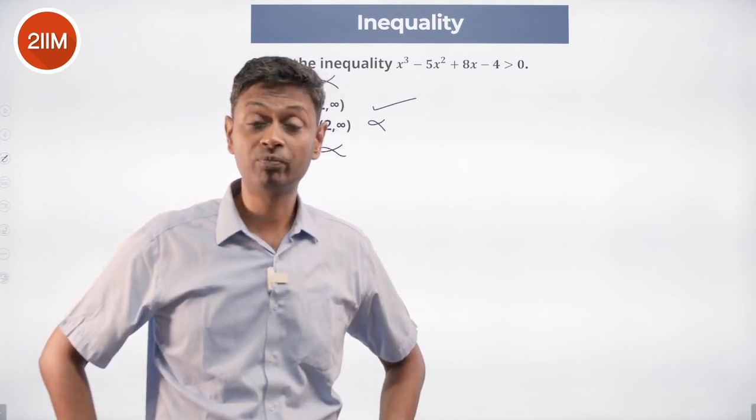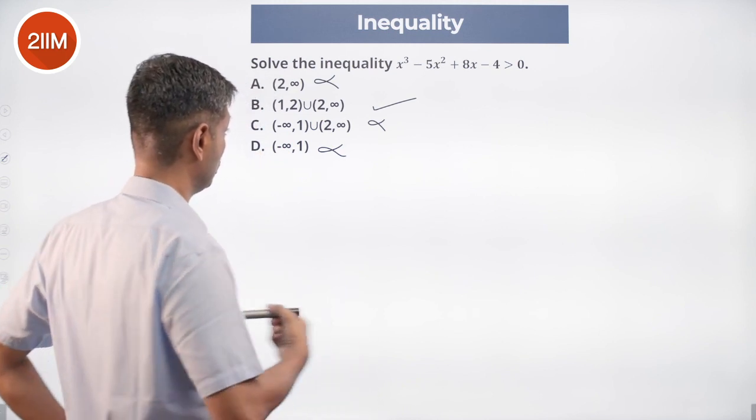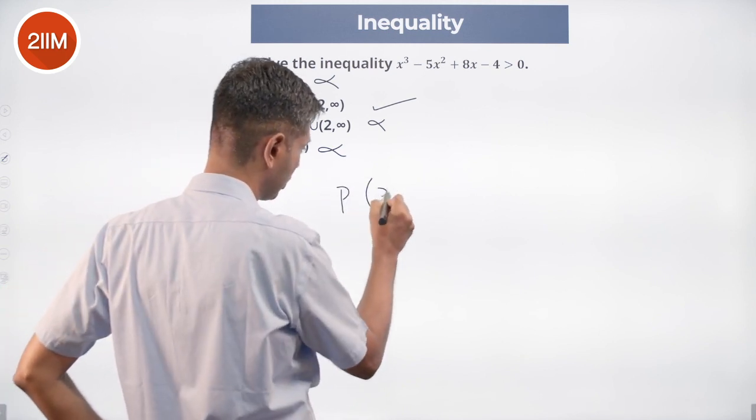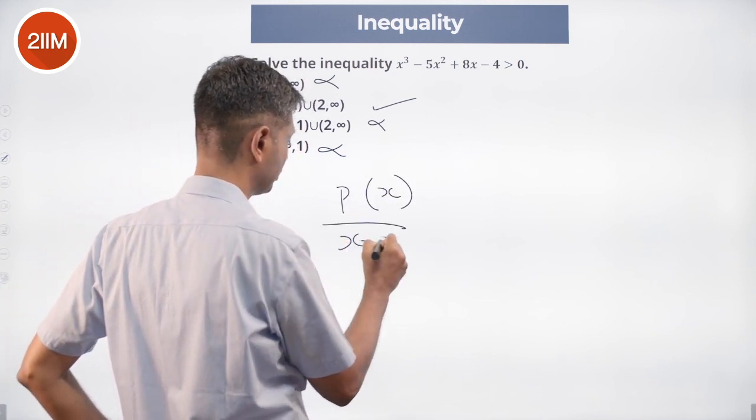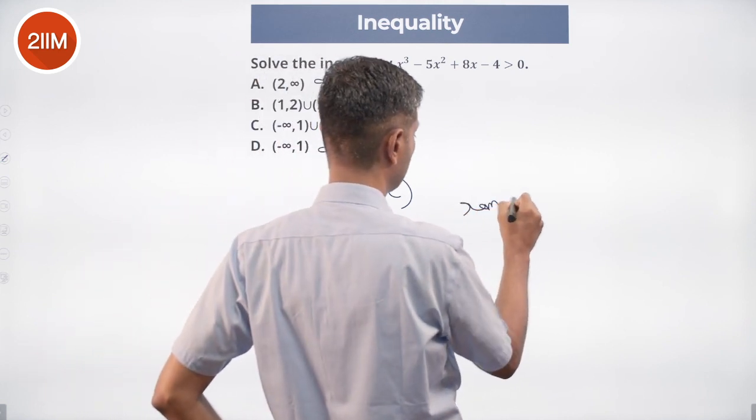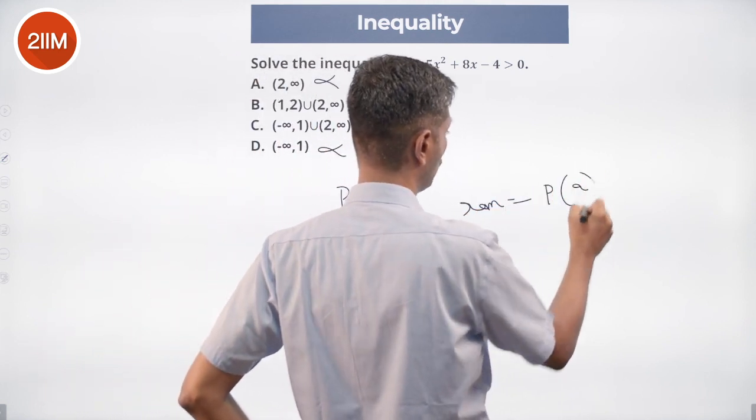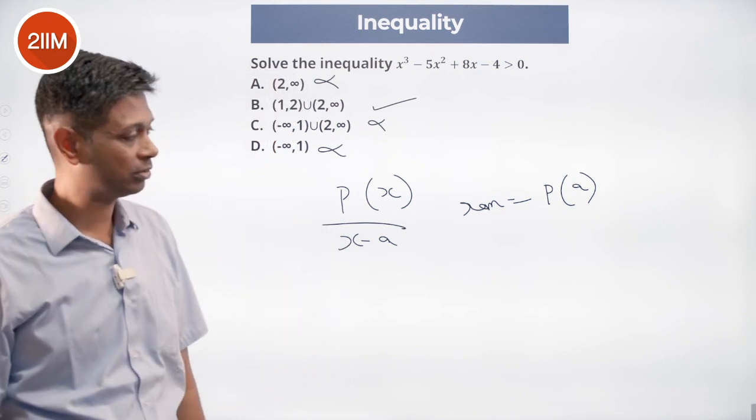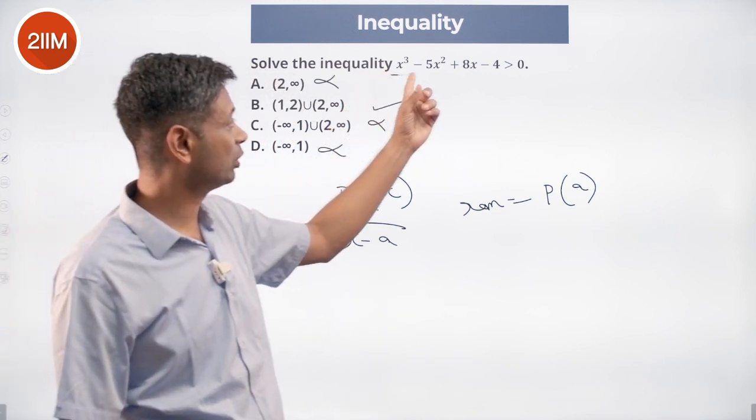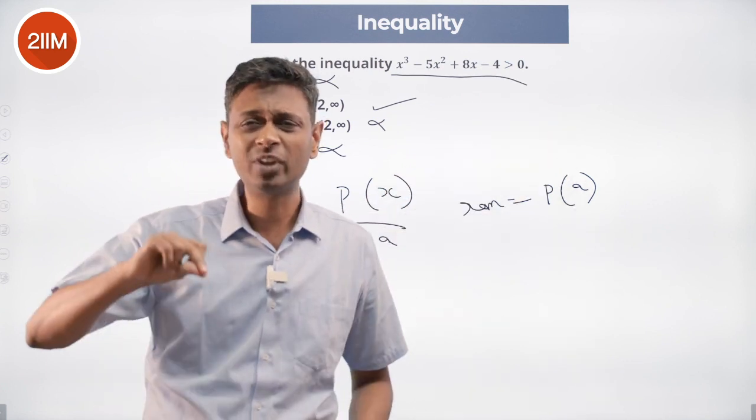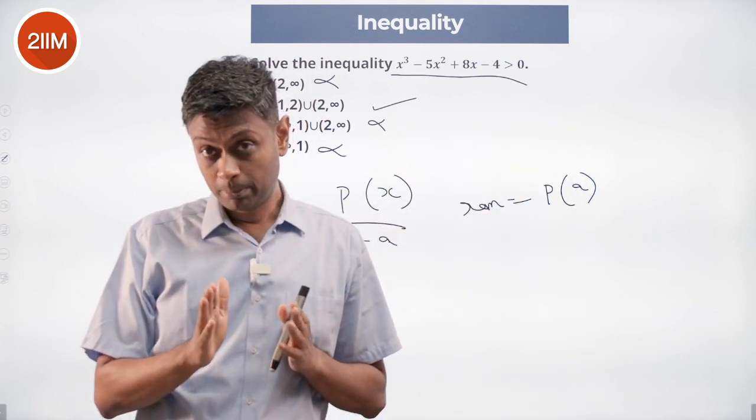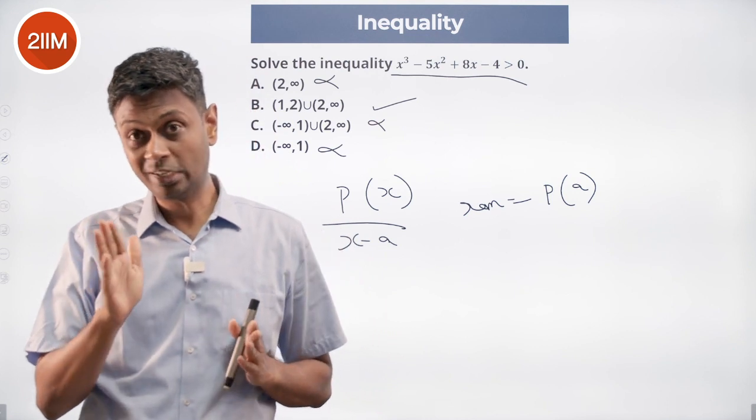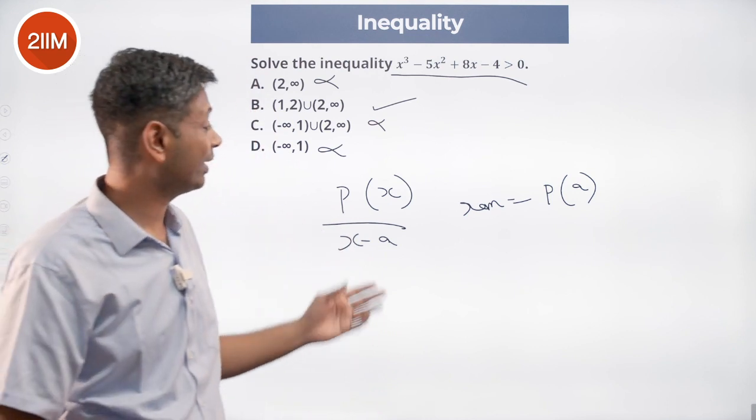When looking to factorize a cubic, remember the polynomial remainder theorem: p(x) divided by (x - a) has remainder equal to p(a). Super powerful because all we do is substitute p(1), p(2), p(-1), p(-2). If one of them goes to 0, then we find one factor.